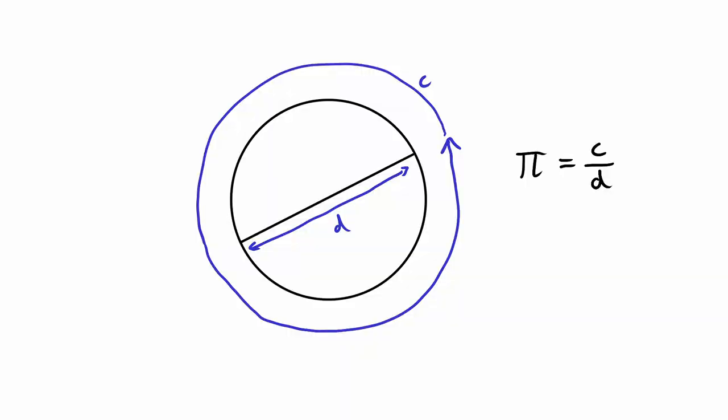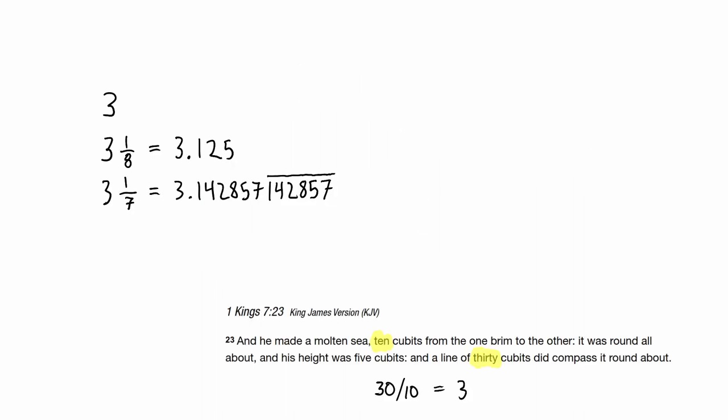The earliest methods seem to have been empirical—draw a circle, measure its circumference and diameter, then divide. Antiquity knew the values 3, 3 1/8, and 3 1/7 as estimates.